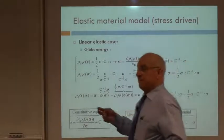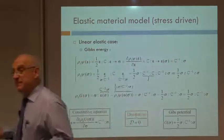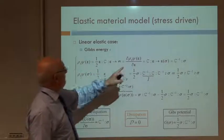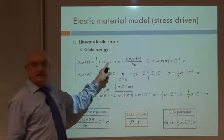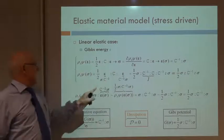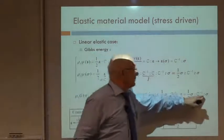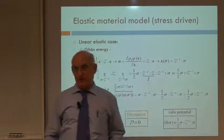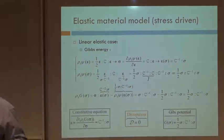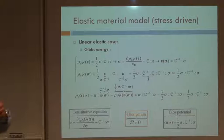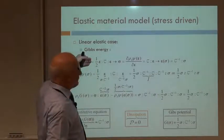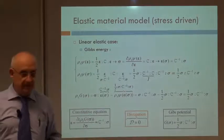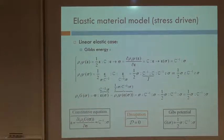Just recall that. In elastic material, the free energy is a quadratic form of the strains involving C. The Gibbs function is a quadratic form of the stresses in terms of C minus 1. We are going to use that in the future, depending on what context we are going to work — either in the strain-driven problems or in the stress-driven problems. So this is for the elastic material.